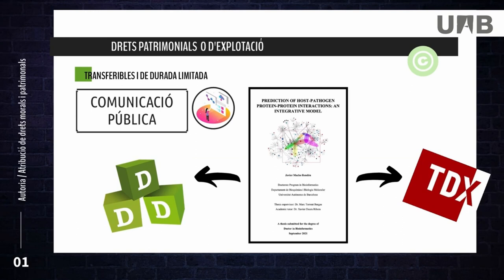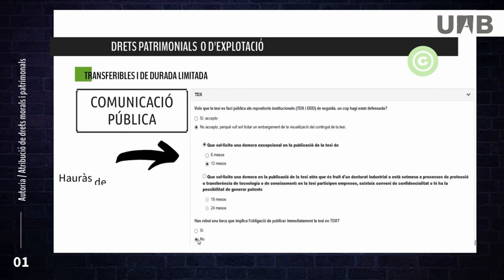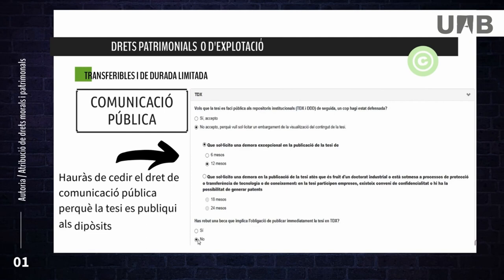Another example is your doctoral thesis, which will end up being published in two repositories: the DDD (UAB Digital Repository of Documents) and TDX (acronym for online doctoral theses). You will have to transfer the right of public communication non-exclusively to the UAB.